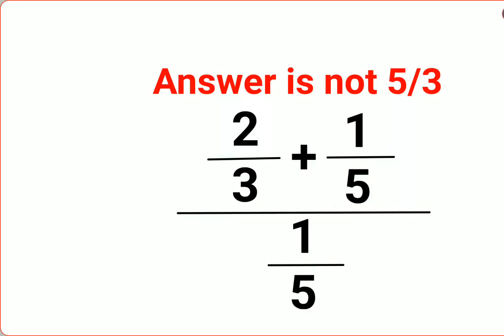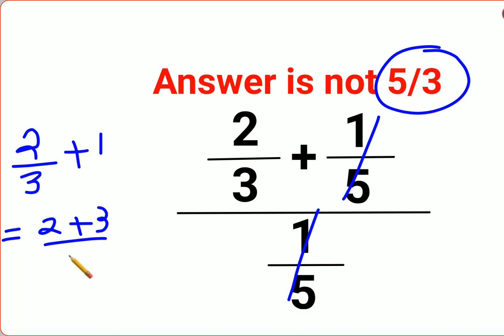Welcome everyone. So yes, a lot of people thought that the answer for this one is supposed to be 5 by 3, because this and this gets cancelled, so you're just left with 2 upon 3 plus 1. So that becomes 2 plus 3 upon 3, that becomes 5 by 3.